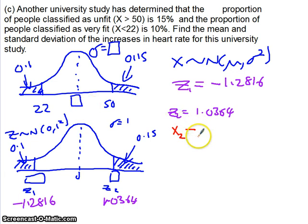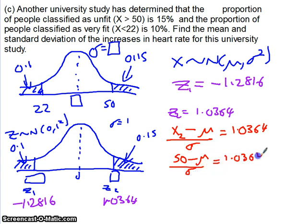Divided by the standard deviation tells us how many standard deviations away that is, which we know to be 1.0364. And we also know that X2 here is 50. So 50 minus μ over σ equals 1.0364. That's our first equation.